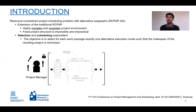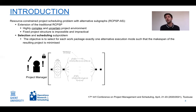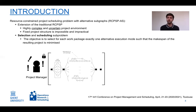The selection subproblem means finding the best set of alternatives in the project. The scheduling subproblem then schedules the selected activities based on precedence relations and resource constraints, similar to the RCPSP. The objective is to select exactly one alternative per work package such that the project makespan is minimized.